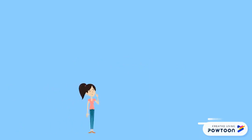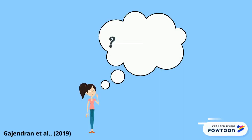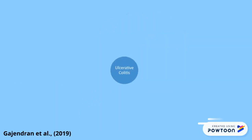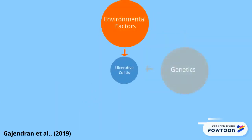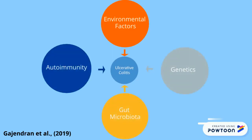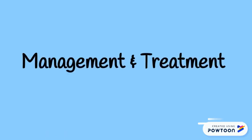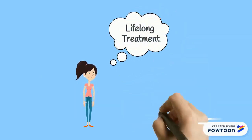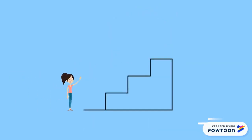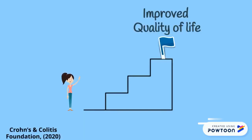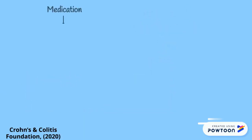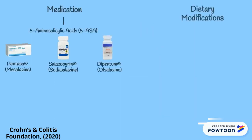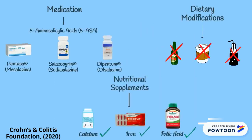The exact cause of ulcerative colitis is currently unclear; however, the condition seems to occur in response to specific risk factors. The main risk factors include environmental factors, genetics, gut microbiota, and autoimmunity. Currently, there is no cure for ulcerative colitis. Individuals typically require treatment throughout their lives, with the ultimate goal of improving quality of life through medication like 5-ASA, dietary modifications, nutritional supplementation, and even surgery.